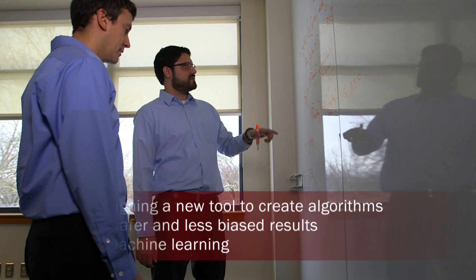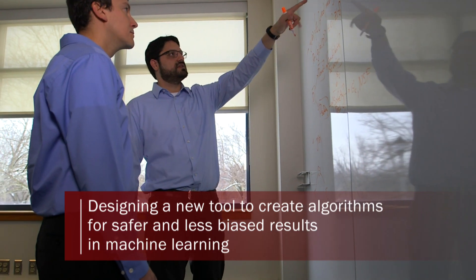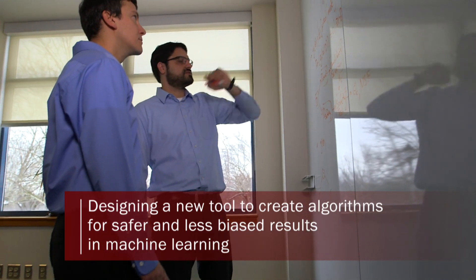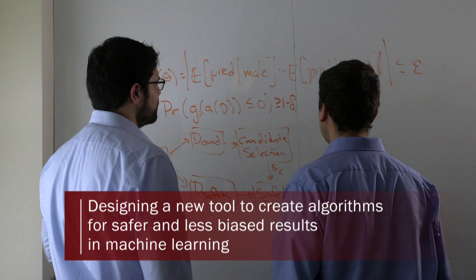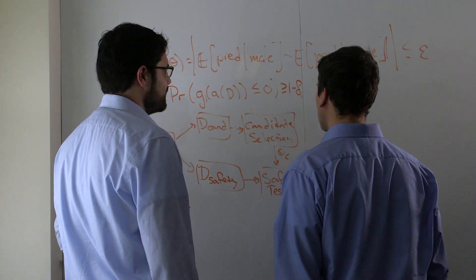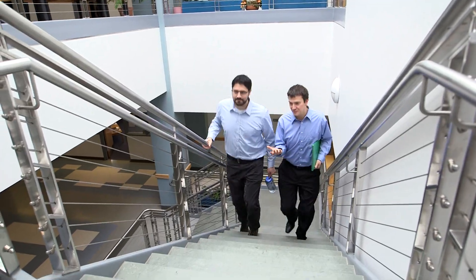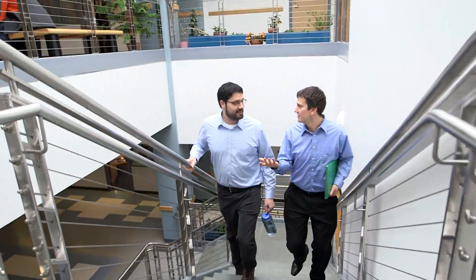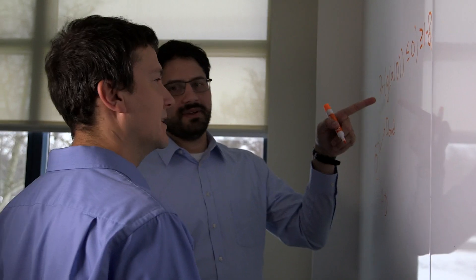The main difference between what we're doing and the standard methods right now is that we're trying to make it easier for the people using machine learning algorithms to control the behavior of the algorithm. Specifically, we're shifting the burden of making sure that the algorithm is well-behaved from the user of the algorithm — the person applying it to their data — to the person that created the algorithm in the first place.